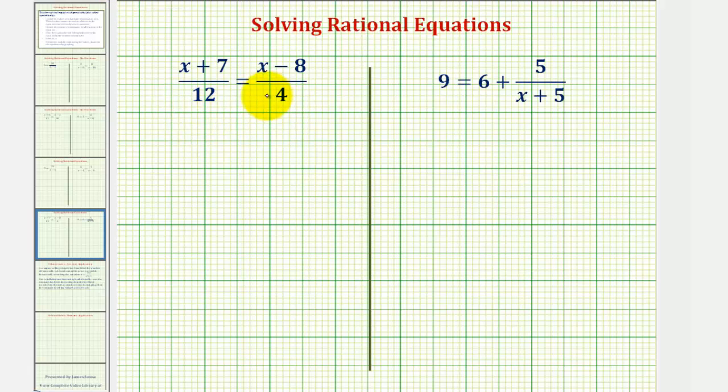So we'll begin by multiplying both sides of the equation by 12. We'd have 12 times the quantity x plus 7 over 12 equals 12 times the quantity x minus 8 over 4. If it's helpful, we could write 12 in fraction form as 12 over 1.